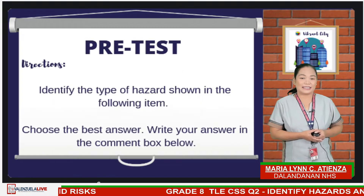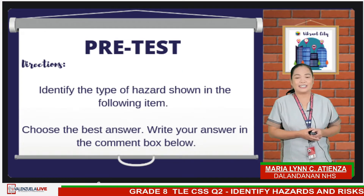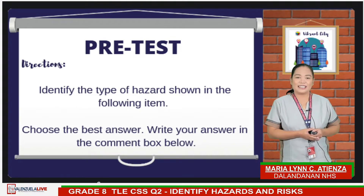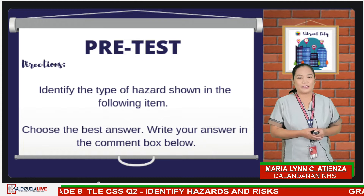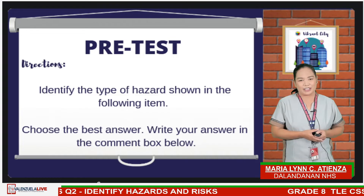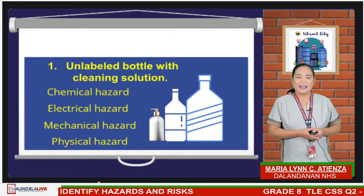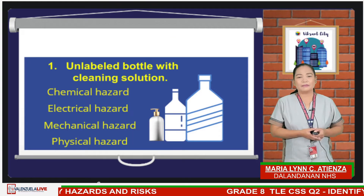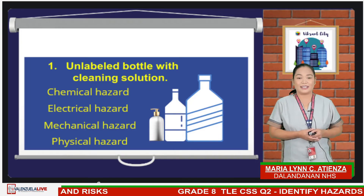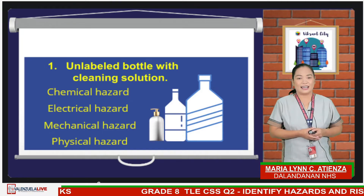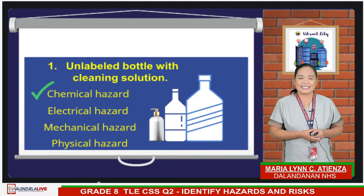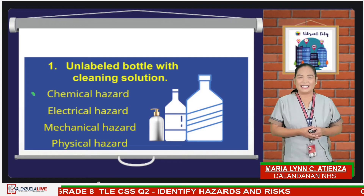Now let's proceed to the pre-test. This will let us know your prior understanding about the topic for today. Try to identify the types of hazards for each item. Choose the best answer and write your answer in the comment box below. For number 1: unlabeled bottle with cleaning solution. Is it chemical hazard, electrical hazard, mechanical hazard, or physical hazard? The answer is chemical hazard.